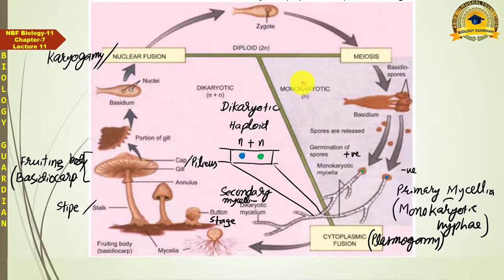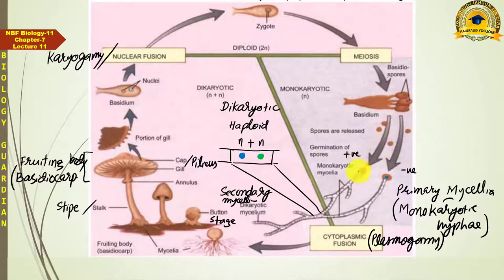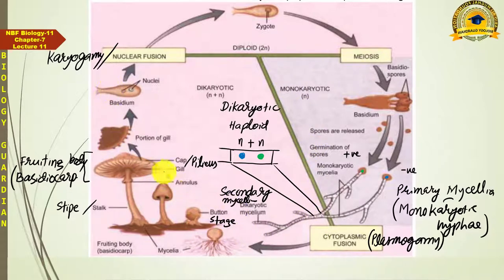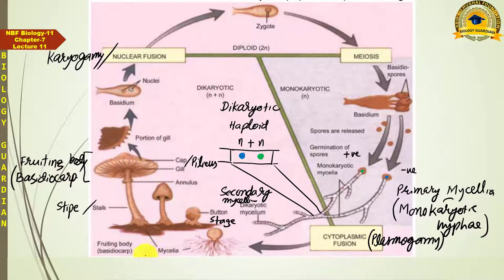The mushroom life cycle is divided into three phases. The first is the monokaryotic phase, in which basidiospores and their germination are described, along with the primary mycelia consisting of monokaryotic hyphae. After this begins a lengthy diakaryotic phase — the phase that persists for the longest period in the life cycle — during which the mycelium grows to form a specific body shape.